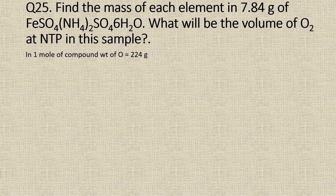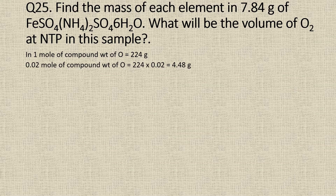Now, in 1 mole of the compound, the number of moles of oxygen atoms is 14. So the weight of oxygen atoms is 224 grams, which we obtain by multiplying the number of moles of oxygen atoms with its atomic weight, that is 14 into 16. Therefore, in 0.02 moles of the compound, the weight of oxygen atoms is 224 into 0.02, which is equal to 4.48 grams.